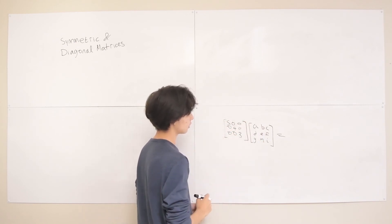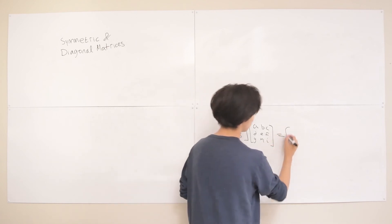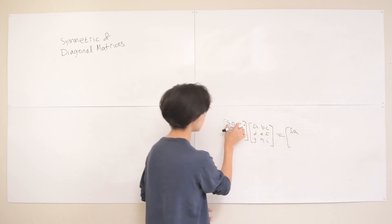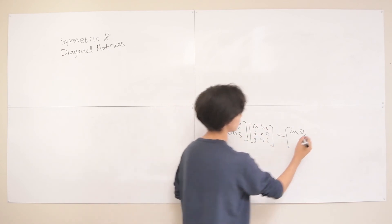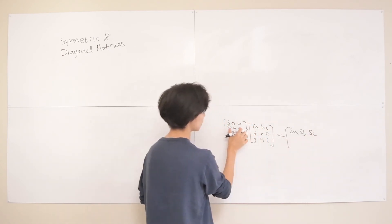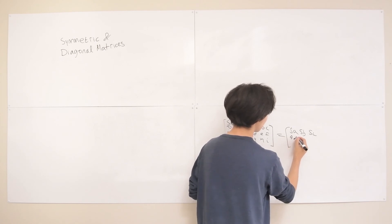So we multiply this by our first column there, and we just get 5A. We multiply this by our second, we just get 5B. Here by our third, we just get 5C. You do the second one of this, we just get 4D. And you kind of see a pattern here.